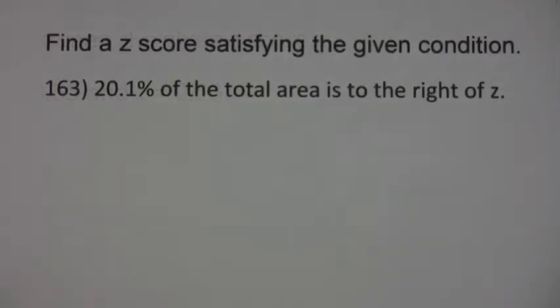Find a z-score satisfying the given condition. I want 20.1% of the total area to the right of z. Now this problem is asking us to work backwards.